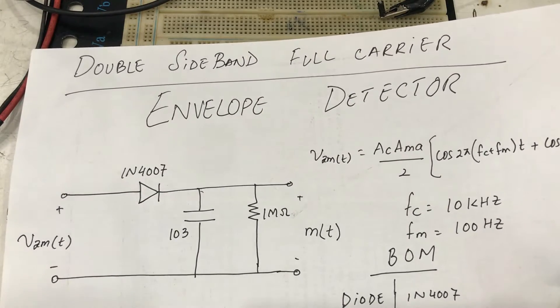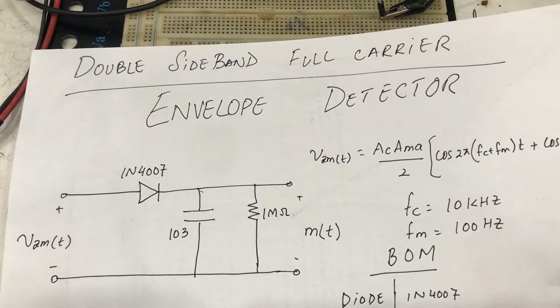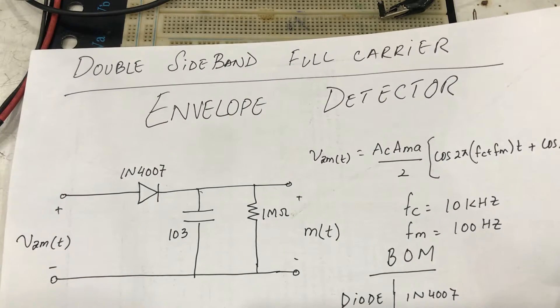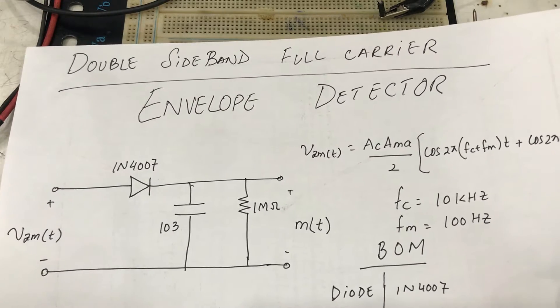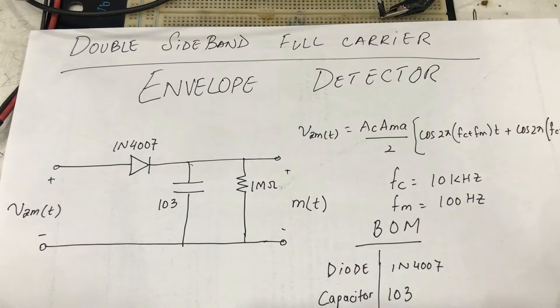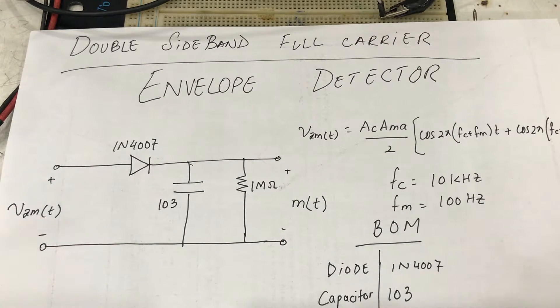For suppressed carrier it's a bit harder to design a receiver — envelope detector won't work. For single sideband it won't work either; for that you need a Weaver demodulator. I'll leave a link to a video on the Weaver demodulator. Since this is a simple circuit, I just want to go over it.